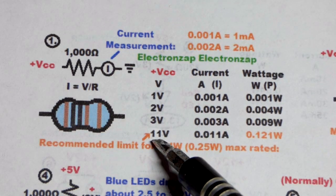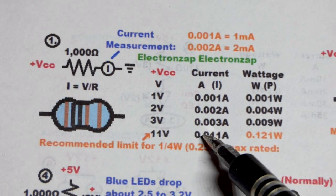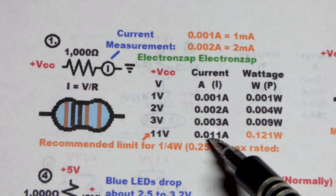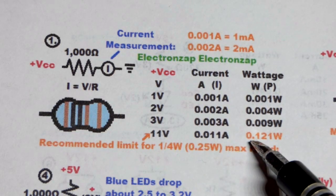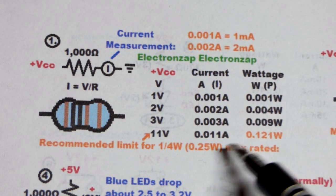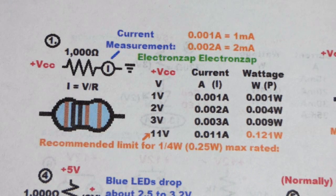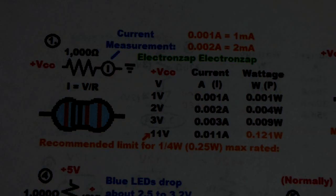At 0.011 amps, that's about 0.121 watts, which is about half of the maximum wattage of a quarter watt resistor. So that's about as far as you want to raise the voltage across one of them.